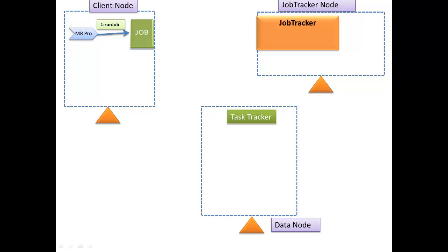I have a client for submitting jobs to the job tracker. In Java, we create a job using the Job class and set parameters like mapper class, reducer class, combiner class, and partition class, along with input and output formats. When we call wait for completion on the job object, it does not submit the job to the job tracker directly — it first calls job submit internally.